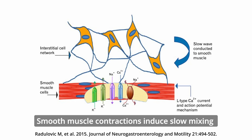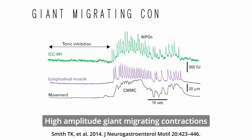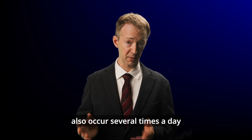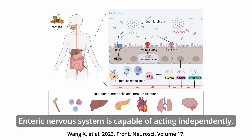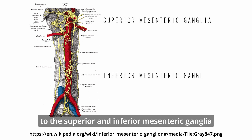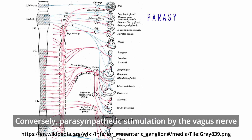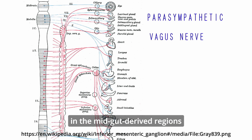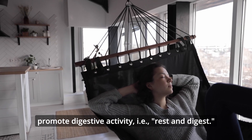Smooth muscle contractions induce slow mixing through haustral contractions generated by the interstitial cells of Cajal. High amplitude giant migrating contractions also occur several times a day and propagate material rapidly through the colon. The enteric nervous system is capable of acting independently, but sympathetic stimulation to the superior and inferior mesenteric ganglia inhibits digestive activity as part of the fight-or-flight response. Conversely, parasympathetic stimulation by the vagus nerve in the midgut-derived regions and the pelvic nerves in the hindgut-derived regions promotes digestive activity — rest and digest.